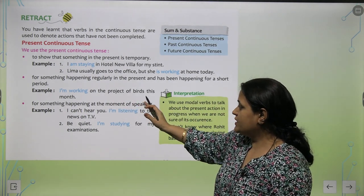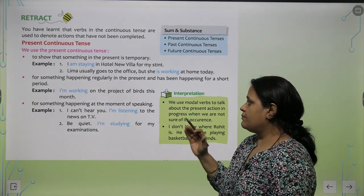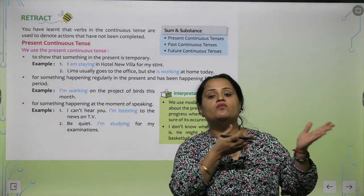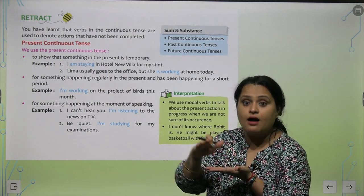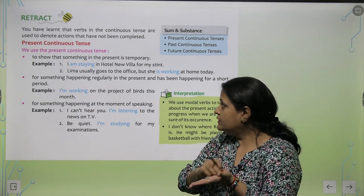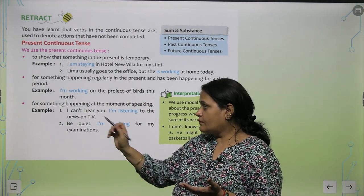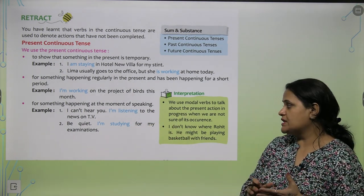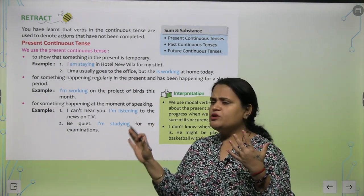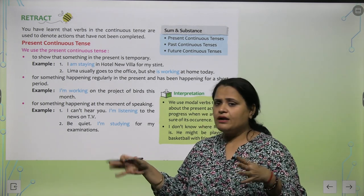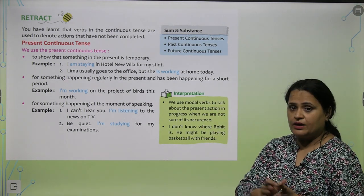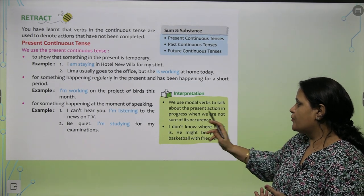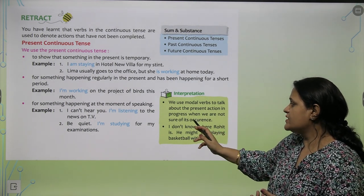'I am working on the project of birds this month.' It's not that he will always work on the birds project, but right now he or she is working. So work that is currently going on in the present comes in the present continuous tense category. For something happening at the moment of speaking: 'I can't hear you, I am listening to the news on TV.' 'Be quiet, I am studying for my examinations.' We also use modal verbs to talk about a present action in progress when we are not sure of its occurrence.